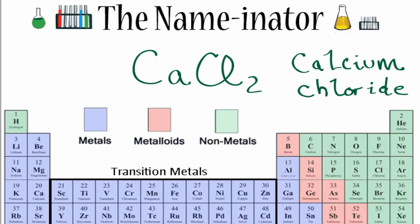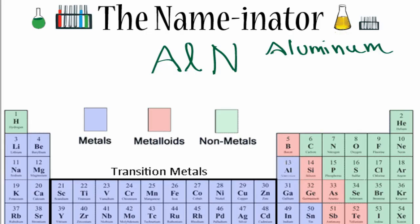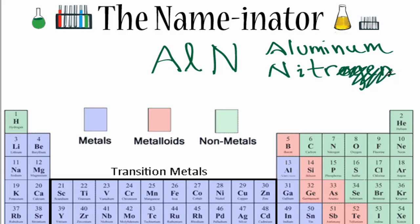Let's try another one. We look up Al on the periodic table — aluminum, it's a metal. And then N, nitrogen, that's a nonmetal, so it's a binary ionic compound. We write the name for aluminum just like we find it on the periodic table. Next we write the name for nitrogen, but we get rid of the ending and then we add I-D-E. So we end up with aluminum nitride.